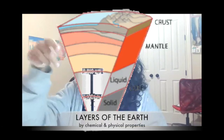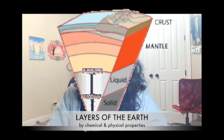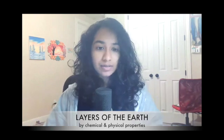With plate tectonics, we're first going to talk about the layers of the earth — back to elementary school. So first, we're going to talk about the layers of the earth with their chemical properties. There are three layers: the crust, the mantle, and the core. Why are they separated? Because they have different chemical properties. Let's dig into it.